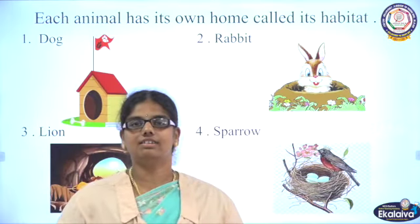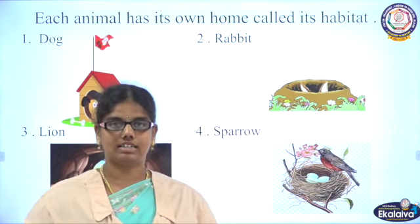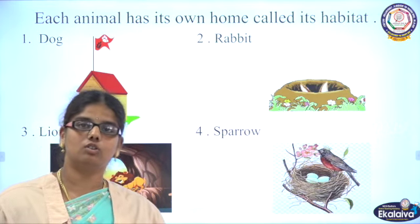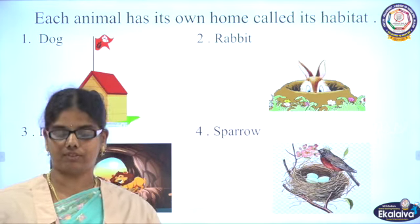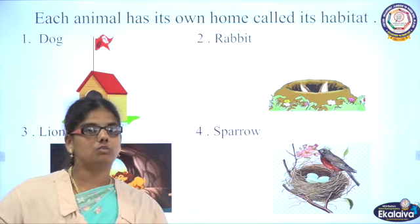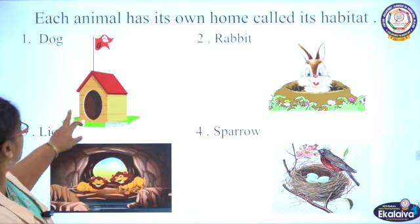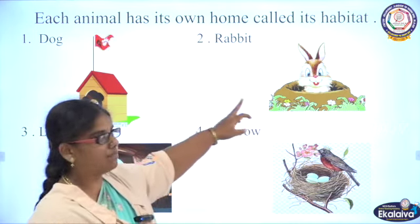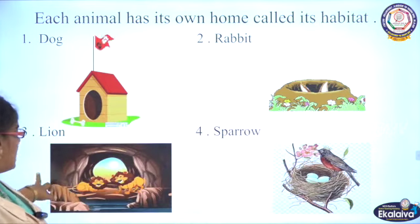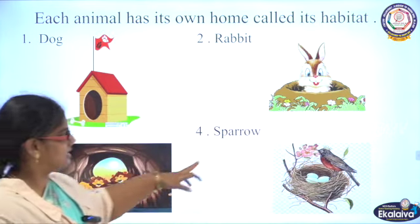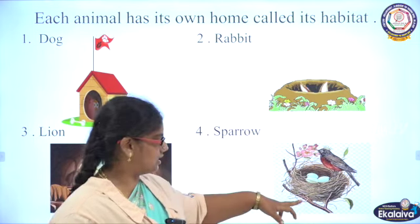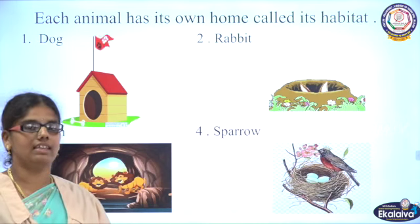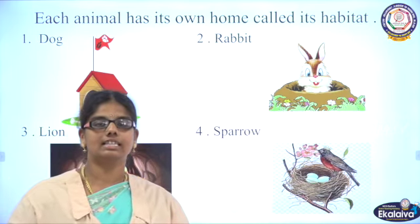Where do we live? We live in a home, that is a house. Like that, animals also stay in their own houses. The home of animals is called their habitat. So where does a dog live? A dog lives in a kennel. A rabbit lives in a burrow. A lion lives in a den. Sparrows — birds — live in their nest. The home of animals is called habitat.